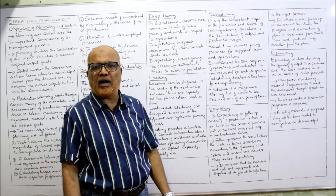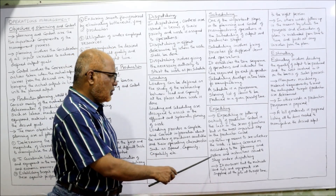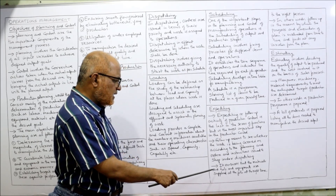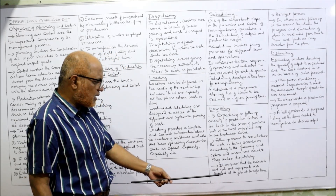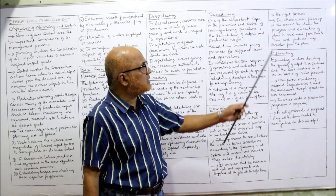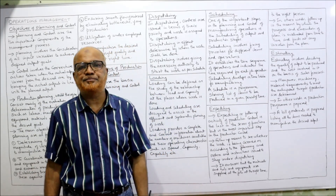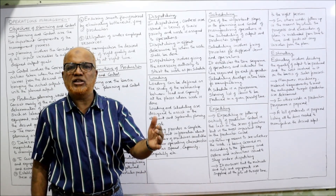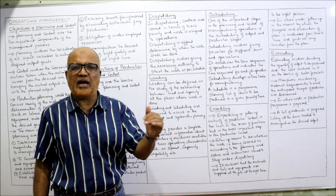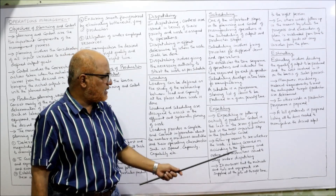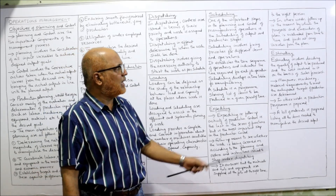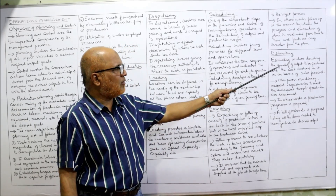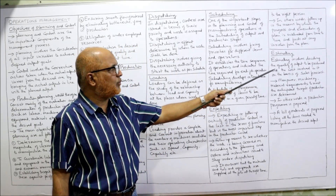Through expediting, we check whether the actual activity is going according to plan. It ensures that materials, tools, and equipment are supplied at the job at the right time to the right person, and that the job has been assigned to the right person. The last function is estimating — finding out and deciding the quantity of output to be produced and the cost involved, based on the sales forecast.